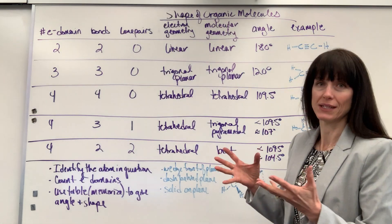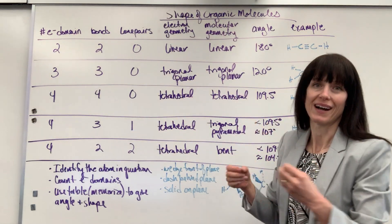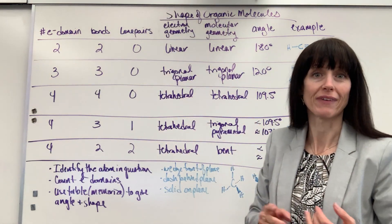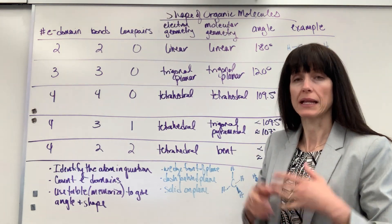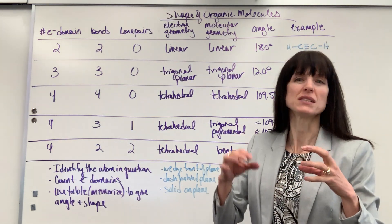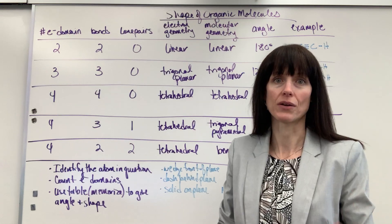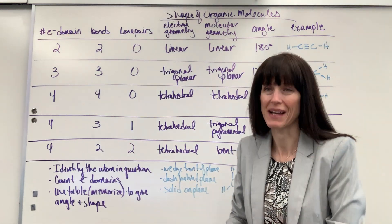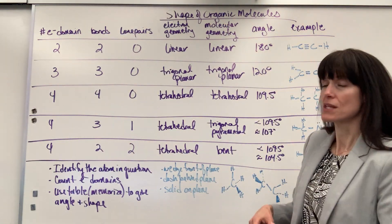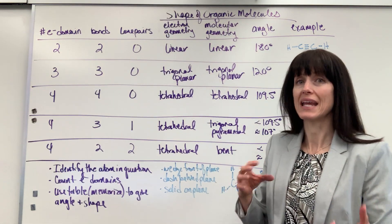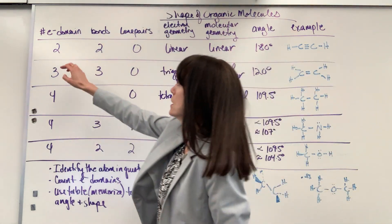First thing that we need to do is review quickly our table for valence-shell electron pair repulsion. It's the principle that electron domains — areas where electrons exist — will always repel one another a maximum distance. So you begin with electron domains; again, areas where electrons exist, and you count those.